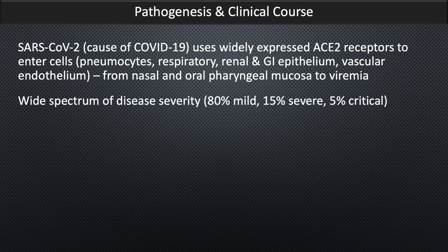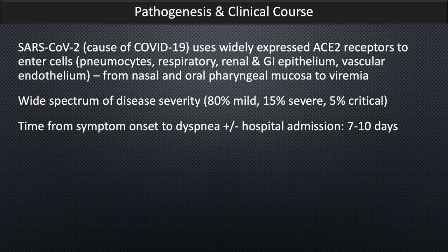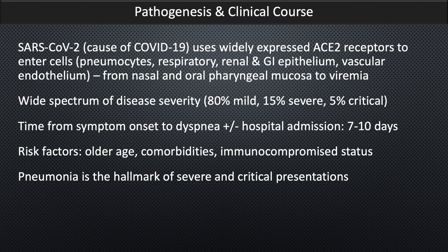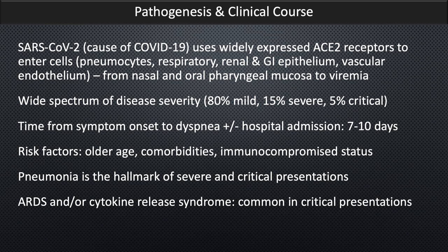There's a wide spectrum of disease severity. 80% of patients are mild, 15% have a more severe, and 5% have a critical clinical course. The time from symptom onset to potential dyspnea requiring hospital admission is from 7 to 10 days. Risk factors of severe and critical presentations include older age, comorbidities, and immunocompromised status. Pneumonia is the hallmark of severe and critical presentations. ARDS, which may be accompanied by cytokine release syndrome, is common in critical presentations and is one of the most important causes of mortality.